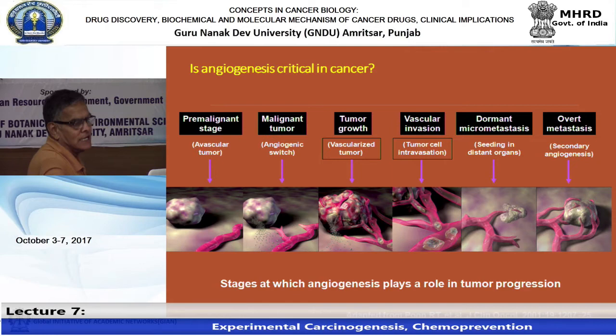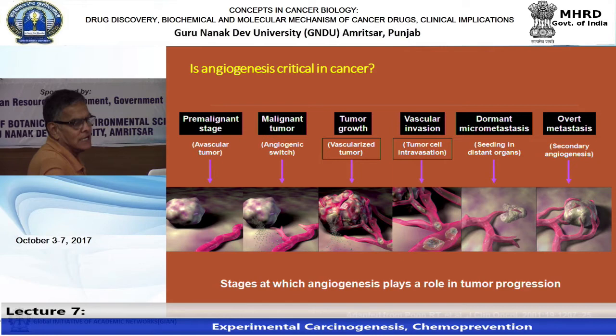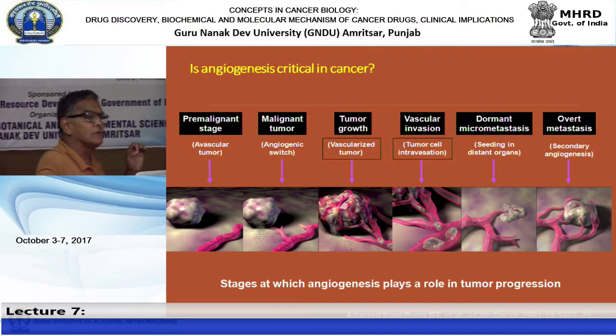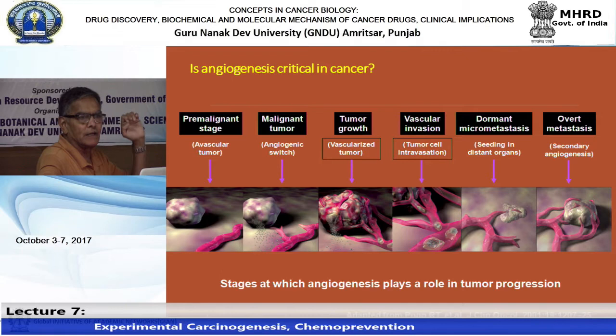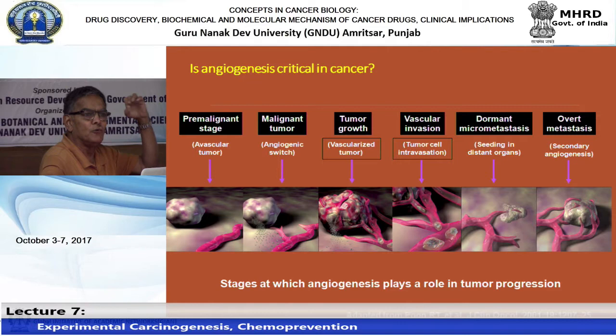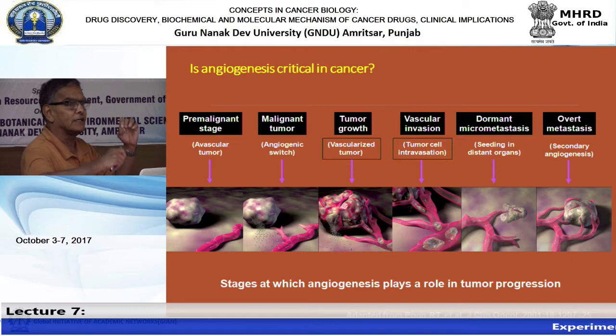Once intravascularization occurs, blood vessels go and supply blood to the organ where the tumor cell has migrated, and the tumor forms new blood vessel formation at the distant site.